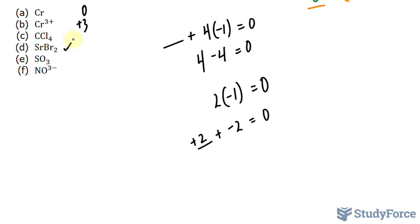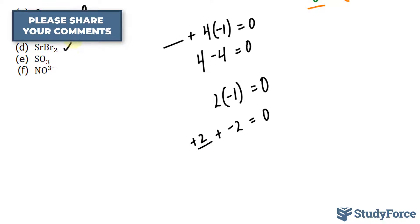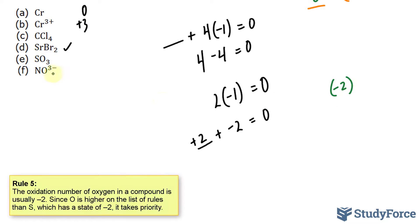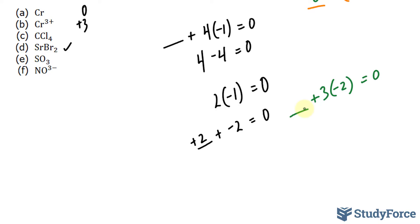In question E, we have SO3. The oxidation state for oxygen is minus 2, and we have 3 of them. This compound is neutral, so what will make the left side and the right side equal? Well, if this is minus 6, therefore, the oxidation state of sulfur has to be positive 6, because positive 6 plus minus 6 is equal to 0.